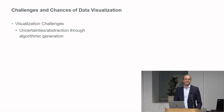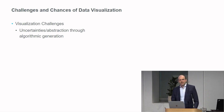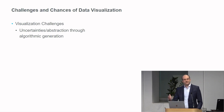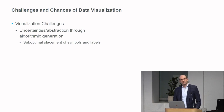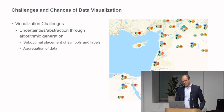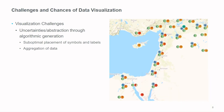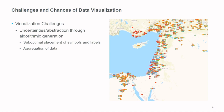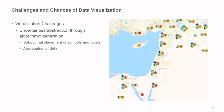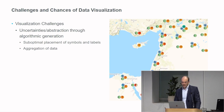Of course, there are also challenges and chances. There is always uncertainty and abstraction through the algorithmic generation. We already heard that in the case of NLP — if things go wrong in processing steps before the visualization, all those errors will end up in the visualization as well. There is suboptimal placement of symbols and labels — even worse when done algorithmically because an algorithm makes certain assumptions and decisions. If you aggregate data, the impression might be very different than if you don't aggregate. At the same time, it might give you a clearer overview — something you need to be aware of.